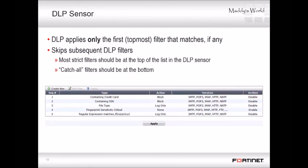Once you've configured your filters in the DLP sensor, continue adding filters until the sensor matches all traffic it should, but doesn't match unintentionally. Finally, apply the DLP sensor by selecting it in a firewall policy. Each filter searches traffic for different types of sensitive information such as credit card numbers or fingerprints. Remember, DLP filters are evaluated sequentially from top to bottom, and FortiGate uses the first matching filter. So if an email contains a credit card number — which filter 1 says to block — but also has sensitive text which filter 5 says to log and allow, FortiGate will only use the first filter and block the email.